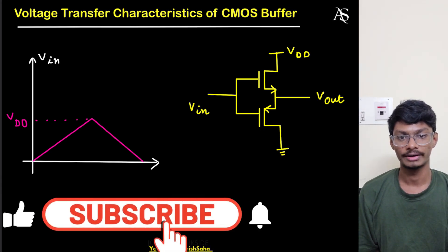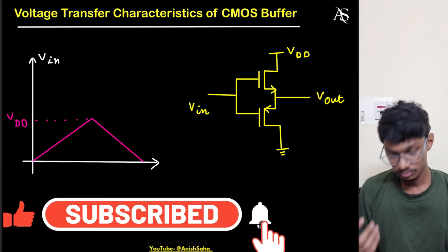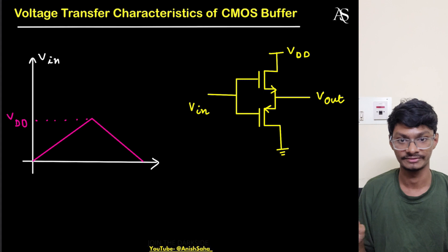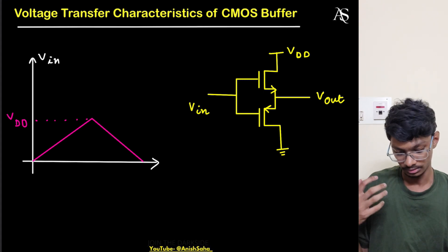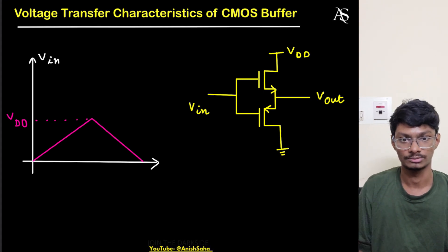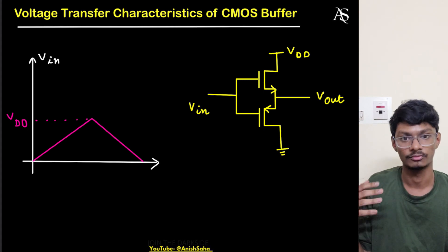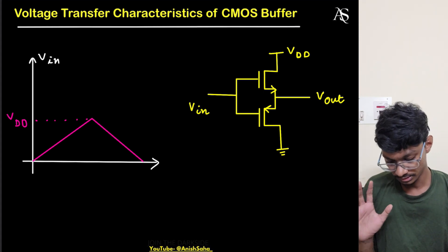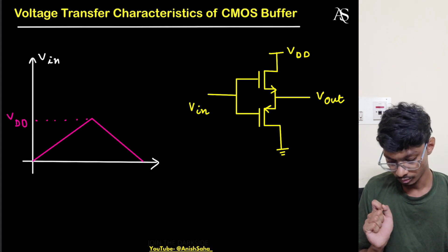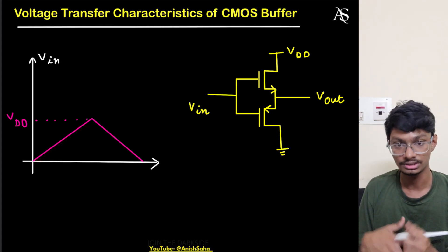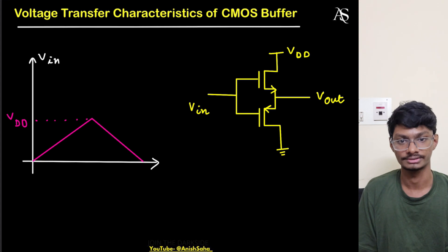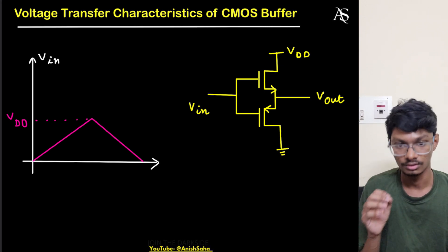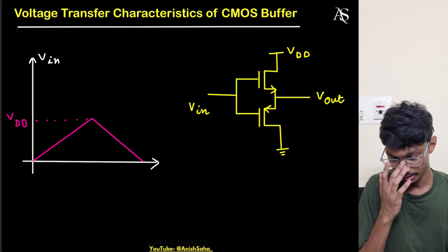Hi everyone, I'm Anish and welcome back to my channel. Today we'll solve the voltage transfer characteristics for a CMOS buffer. I hope you've watched my previous video where I explained the pulse input for a CMOS buffer — how the output will look and what a CMOS buffer is. Here, instead of a pulse, we're going from zero to Vdd and then back down, which will help us understand the voltage transfer characteristics.